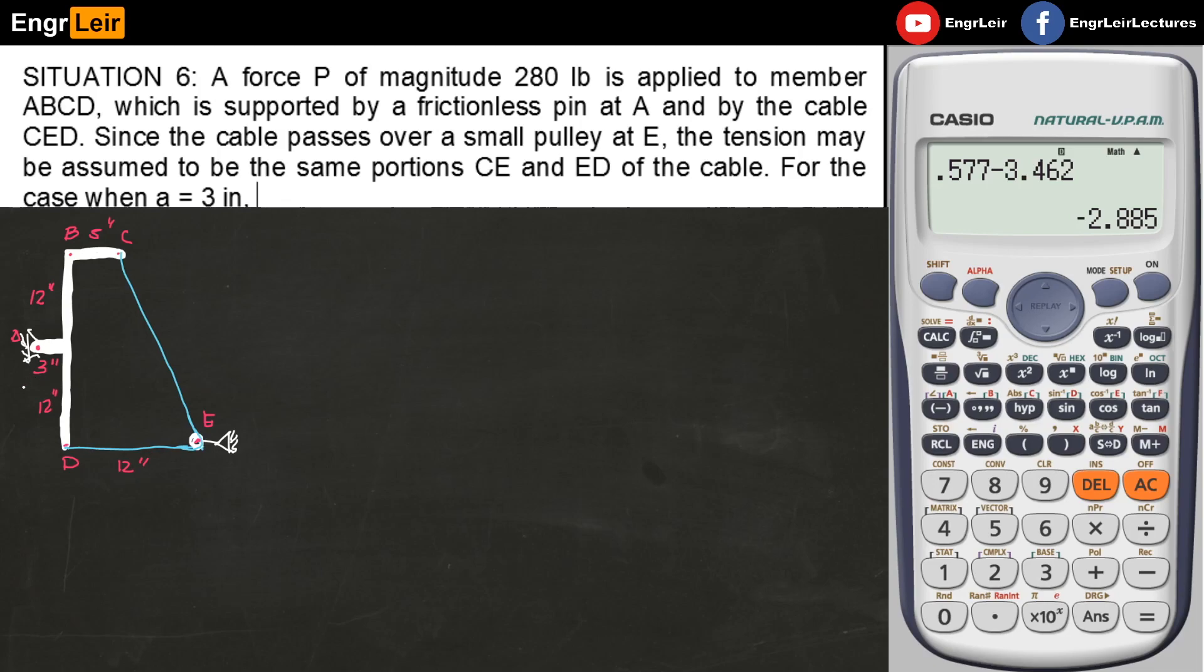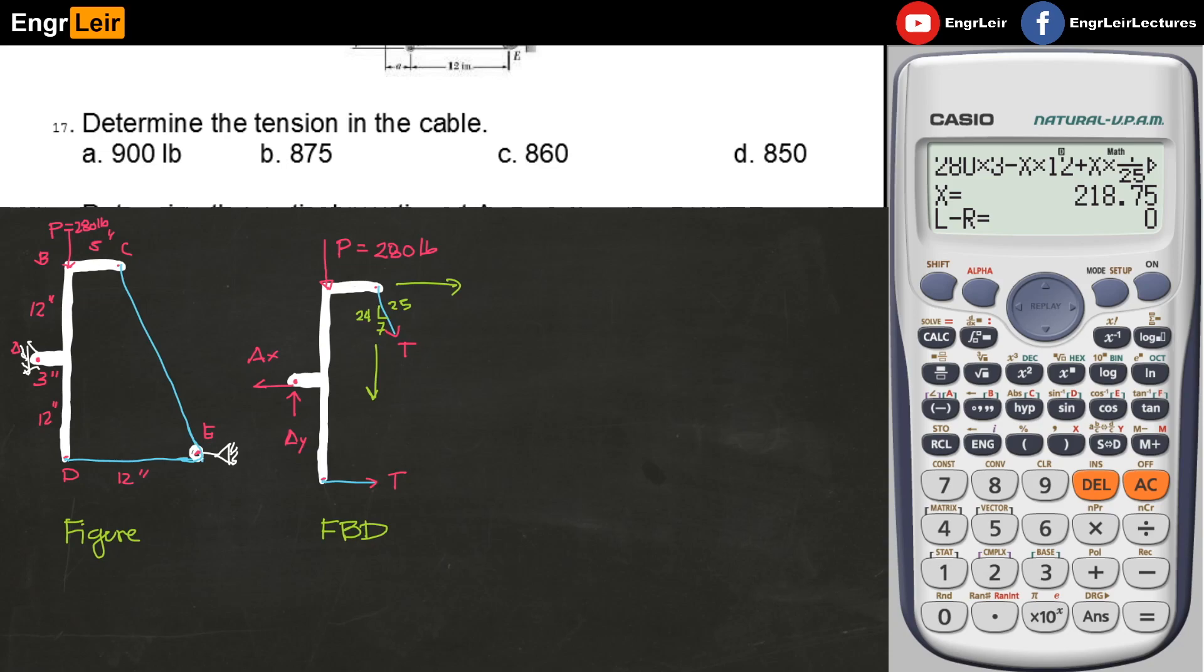For the case, A is 3 inches. This distance here wasn't shown in the figure, so I just put 3 inches as the measurement. The first question is to determine the tension in the cable. So this is the free body diagram.